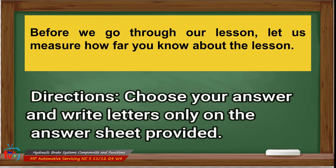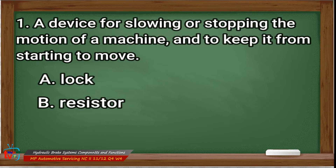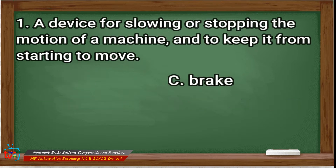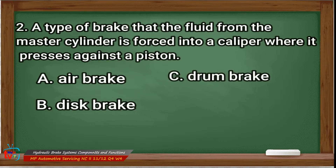Before we go through our lesson, let us measure how far you know about the new lesson. Write your answers — letters only — on the answer sheet provided. Number one: a device for slowing or stopping the motion of a machine and to keep it from starting to move. A: lock, B: resistor, C: brake, D: all of the above. Correct answer: letter C, brake. Number two: a type of brake where fluid from the master cylinder is forced into a caliper where it presses against a piston. A: air brake, B: disc brake, C: drum brake, D: disc brake.